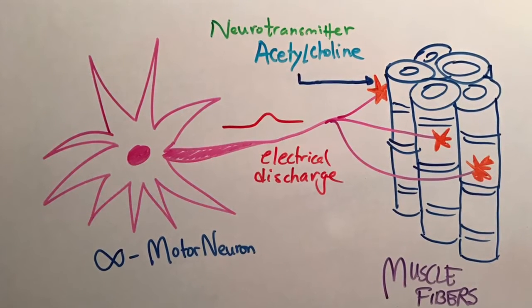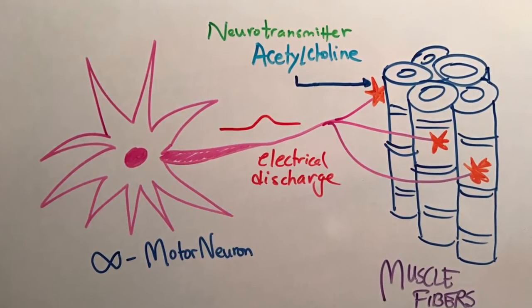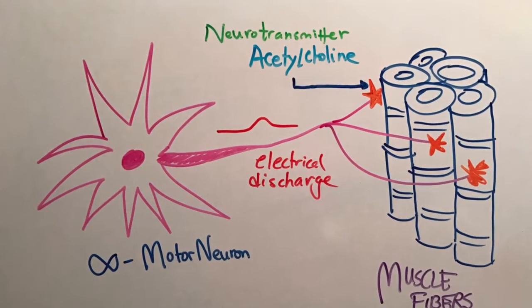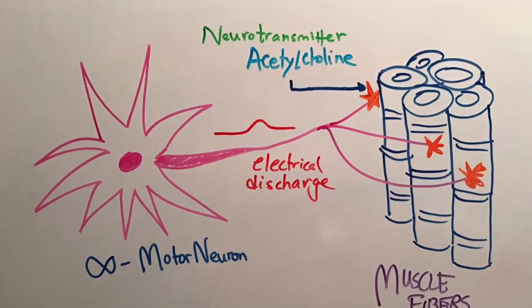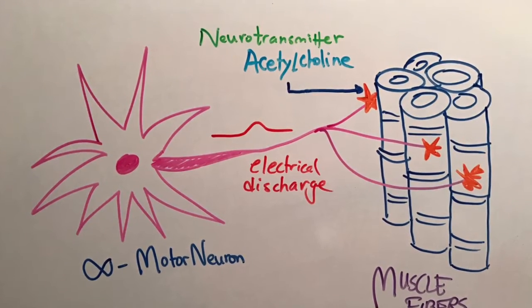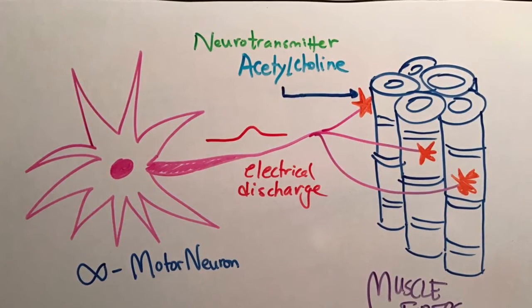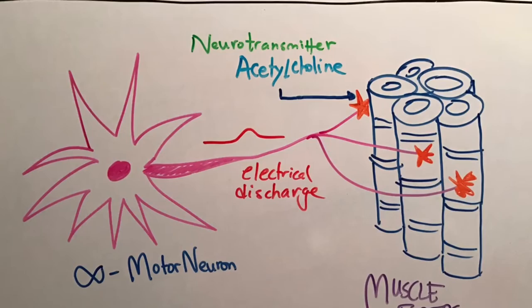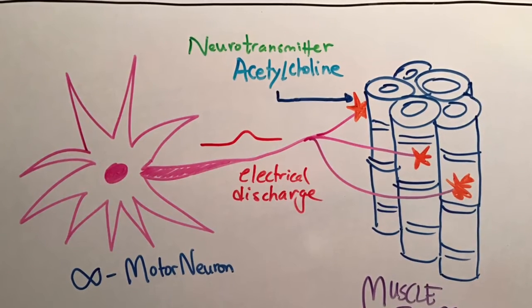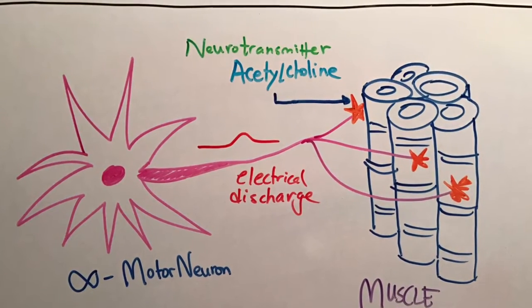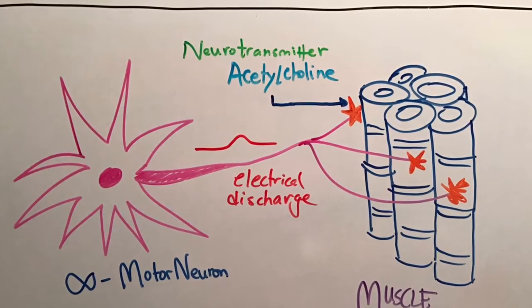In today's video we will discuss the various types of skeletal muscle contractions. The electrochemical connection between a motor neuron and a target muscle fiber forms through the release of the neurotransmitter chemical acetylcholine with each electrical activity of the neuron.